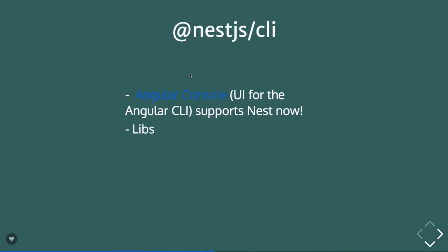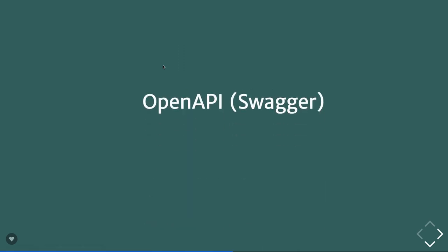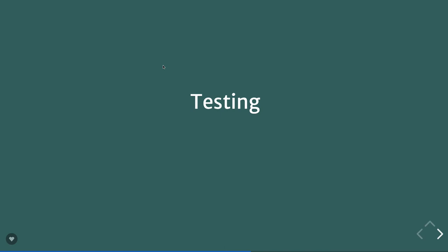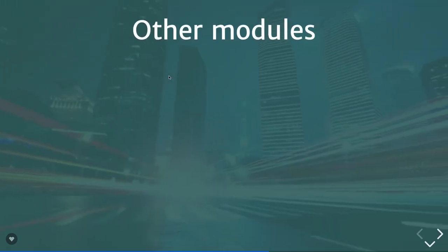NestJS comes with a Nest CLI — similar to Angular CLI. You can install it with 'npm install -g @nestjs/cli' and create a basic application skeleton. NestJS also comes with built-in OpenAPI Swagger support as a module. You don't need to create a spec YAML manually — just use annotations on your routes and it will generate your Swagger API definitions automatically. NestJS also provides end-to-end testing and unit testing, similar to bootstrapping Angular modules for component testing.